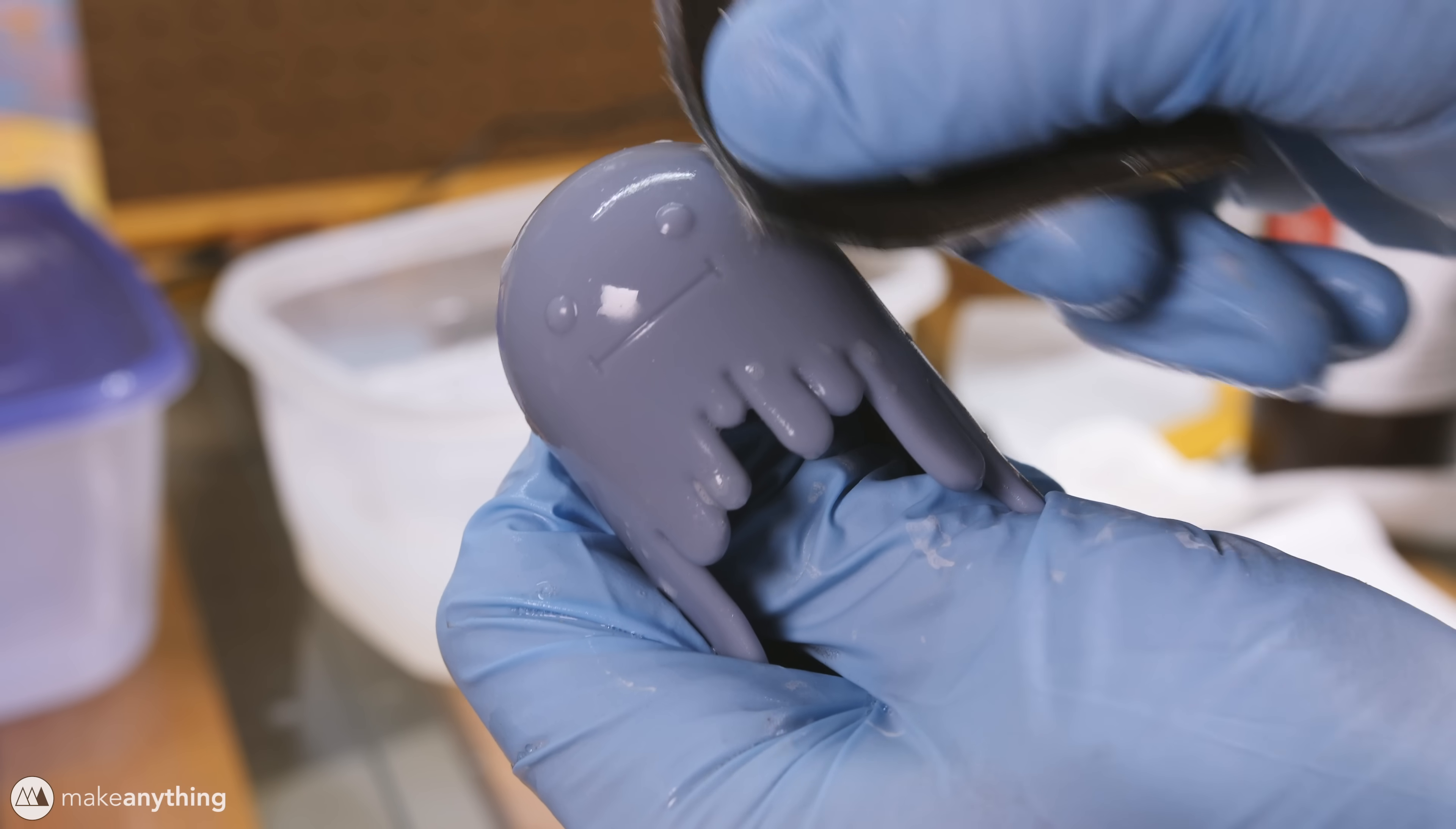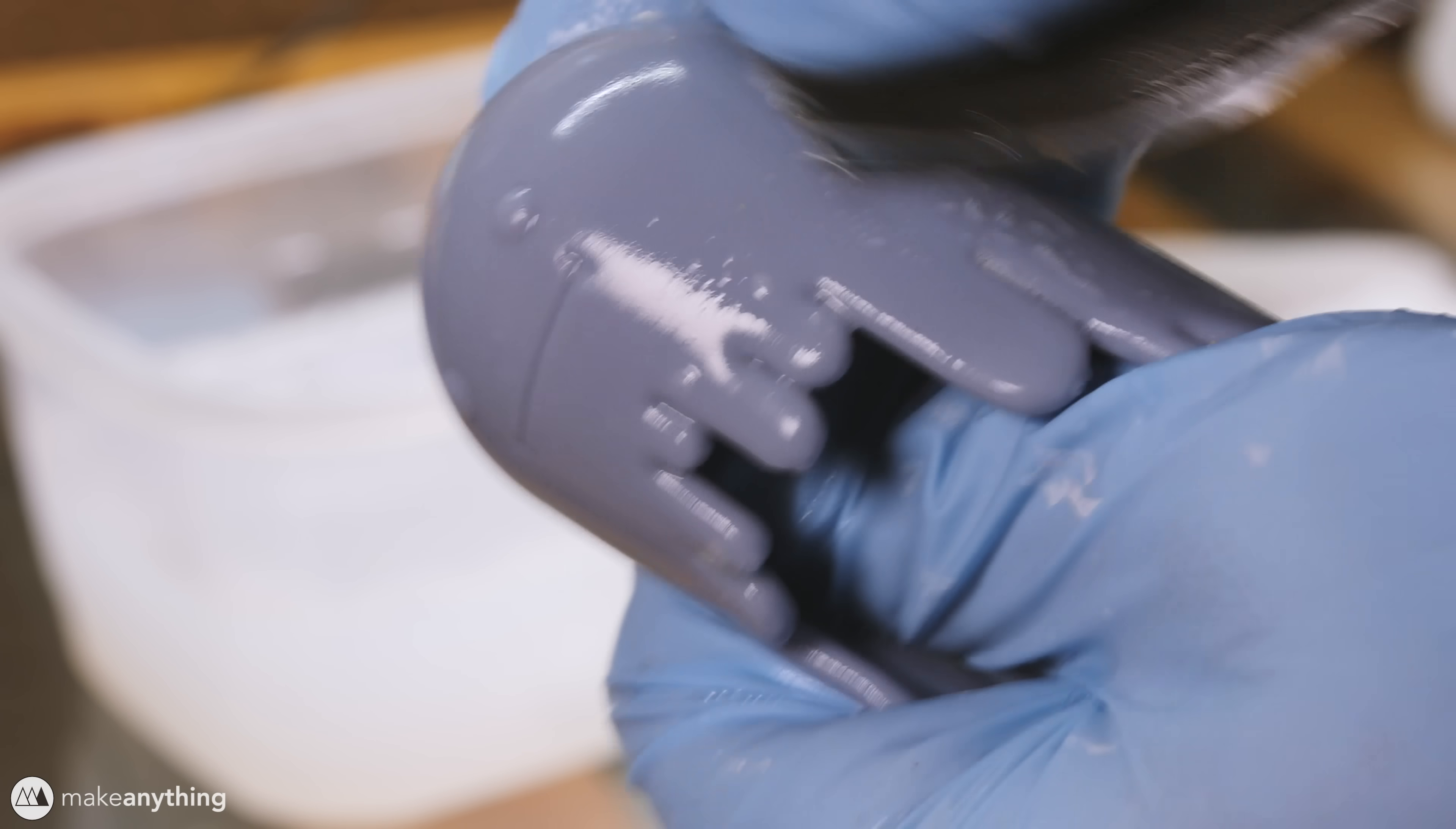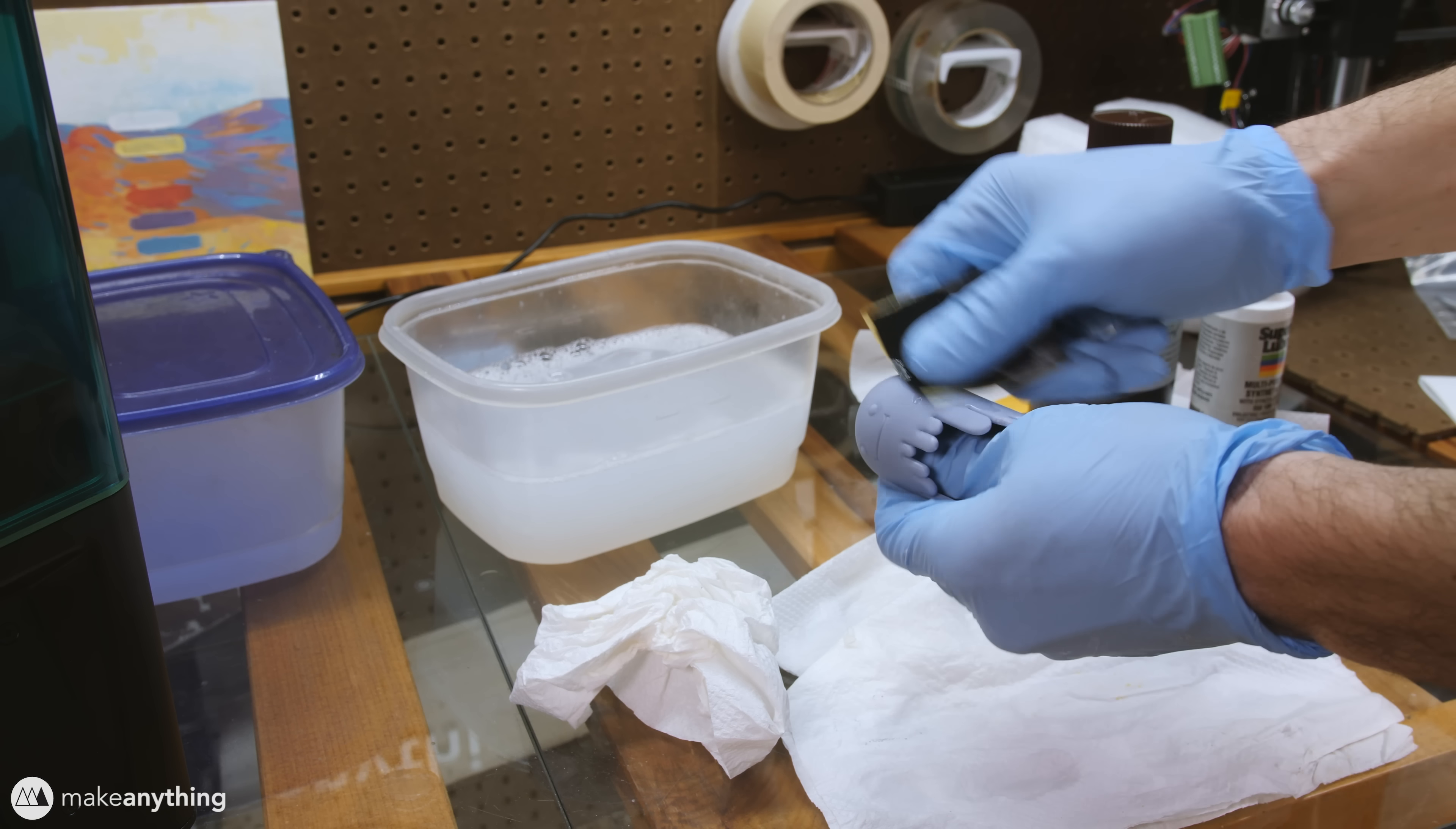Wet sanding is nice because the water acts as a lubricant to help get a smoother finish and it also keeps the dust from flying into the air. Plus it looks like our little fella here is enjoying it. Here's the model after that 400 grit pass and as you can see it's pretty smooth at this point but there are still some clear scratches on the surface so now we'll move up to 600 grit sandpaper and continue wet sanding.